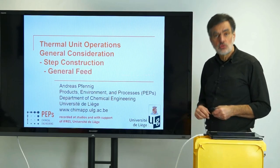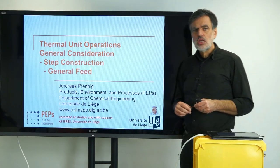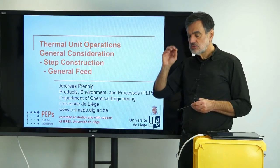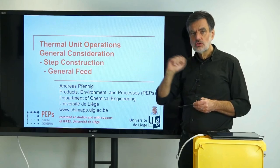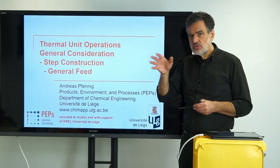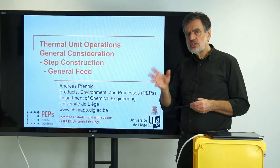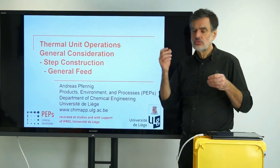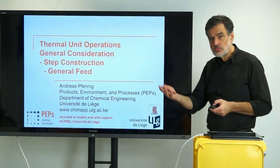Now let's continue with the next thing we want to regard: a general feed. That's still also missing — we didn't consider that so far. Before, we have always added something to a dedicated phase, either the G-dot or the L-dot phase, with arbitrary compositions or with exact compositions that we have in the process. But now we want to assume that we have an arbitrary feed, which means it may be a two-phase feed. We don't know exactly to which — for the design it has to be defined — but it's a variable phase ratio.